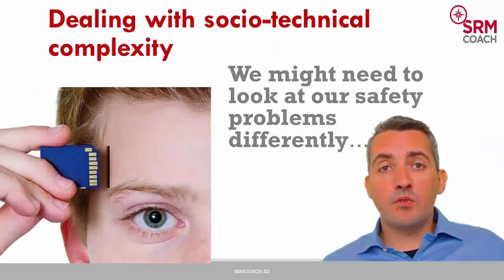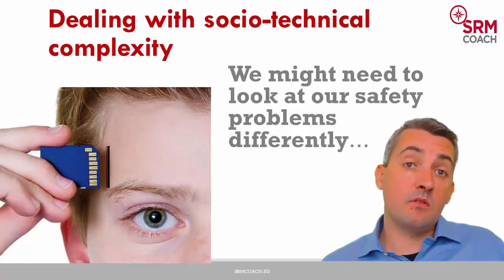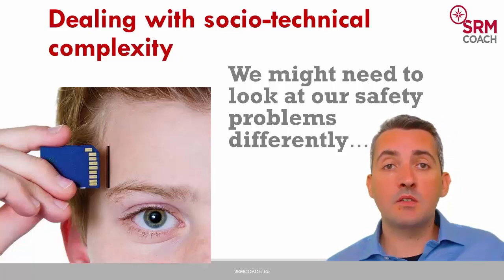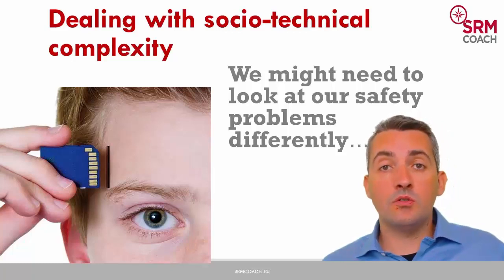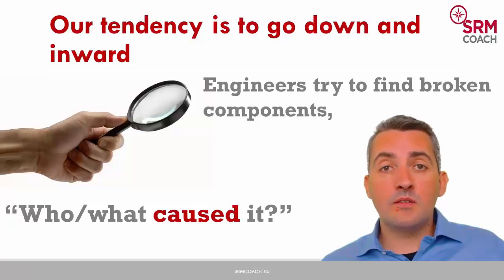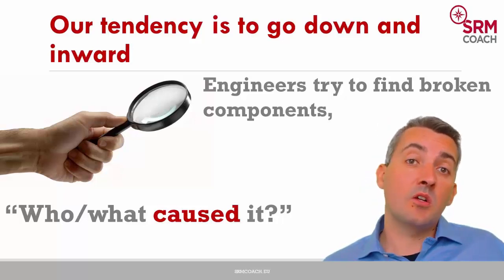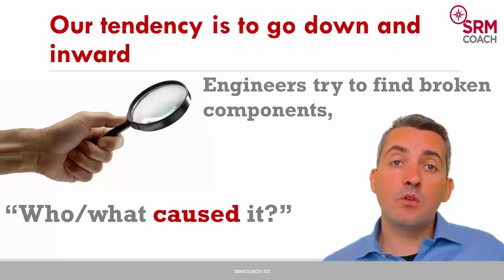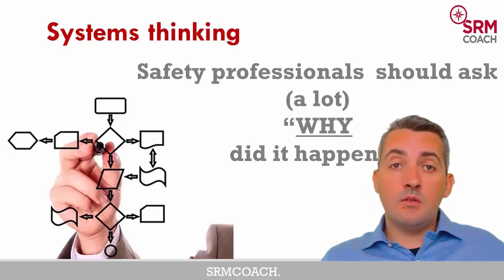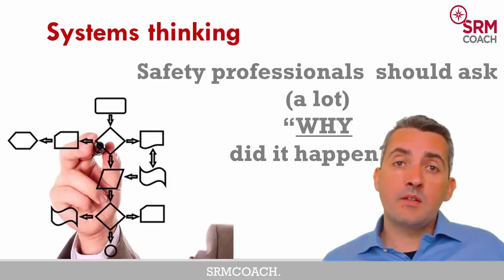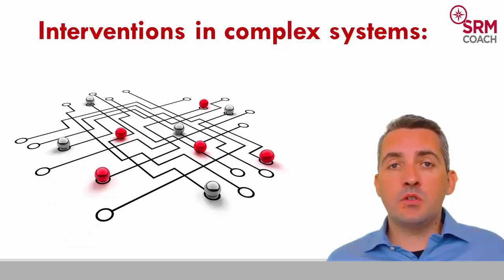Now what's the impact for safety management? In safety management we have to understand that the behavior of people, and even technical systems, within our complex system are consequences of the system conditions — and they're not necessarily causes. So when we look at a system and see failed elements, we have to ask: was that failure a consequence of the breakdown of the system, or was it a cause? It's very unlikely to be a cause. We have to look up and outward, instead of down and inward, when analyzing complex socio-technical system failures and look at the interactions between the various elements of our system.